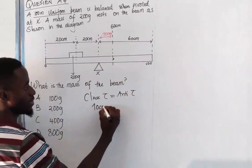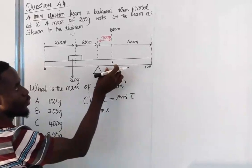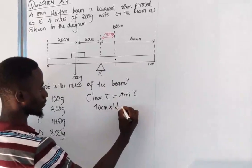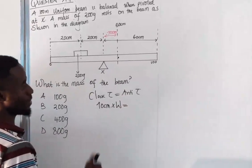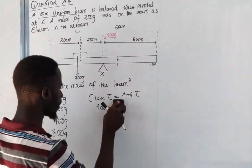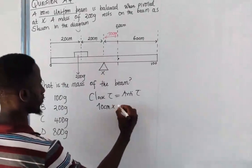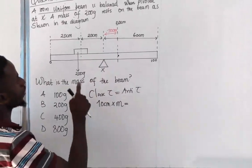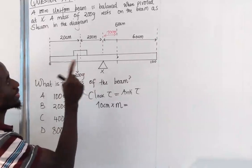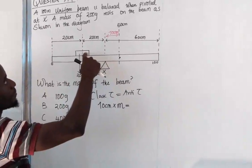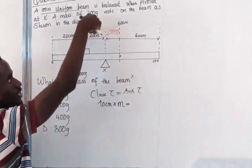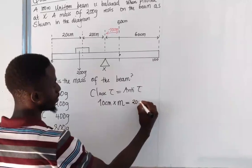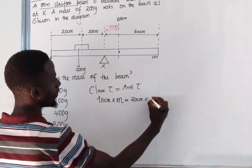So I'm going to say 10 centimeters multiplied by the mass of the ruler. Let's call it M. M is equal to... anticlockwise we have this, and the distance of this mass from the pivot is 20. You can see that there's 20. So I say 20 centimeters multiplied by 200 grams.